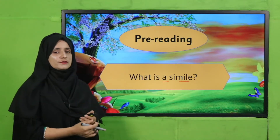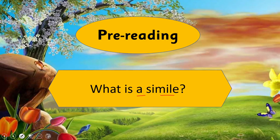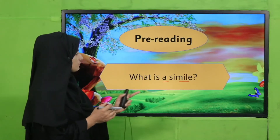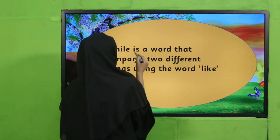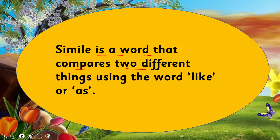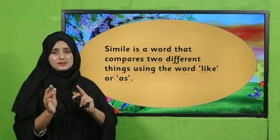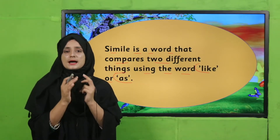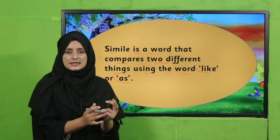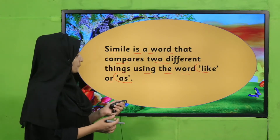Let's refresh our knowledge. What is a simile? Pause the video and get the answer from your students. A simile is a word that compares two different things using the word 'like' or 'as.' When we compare things — how they look, or how they are — and we compare one thing to another, that is called a simile.